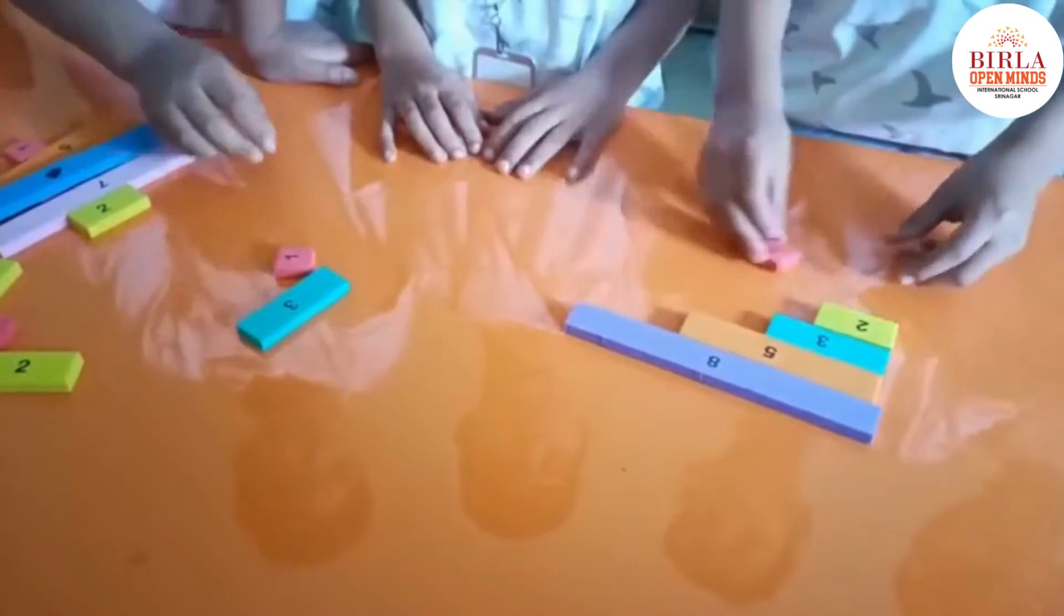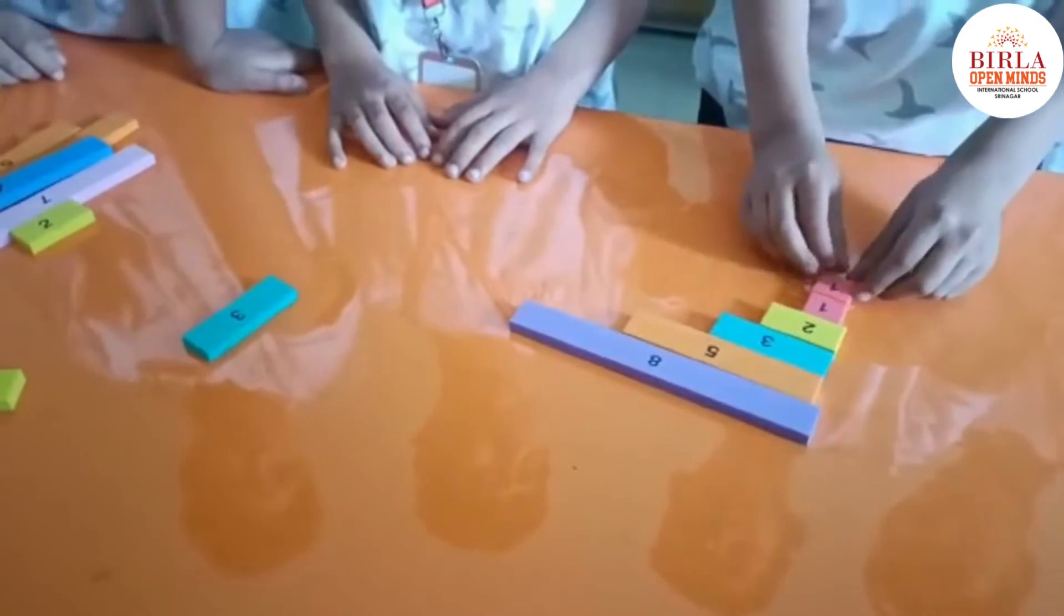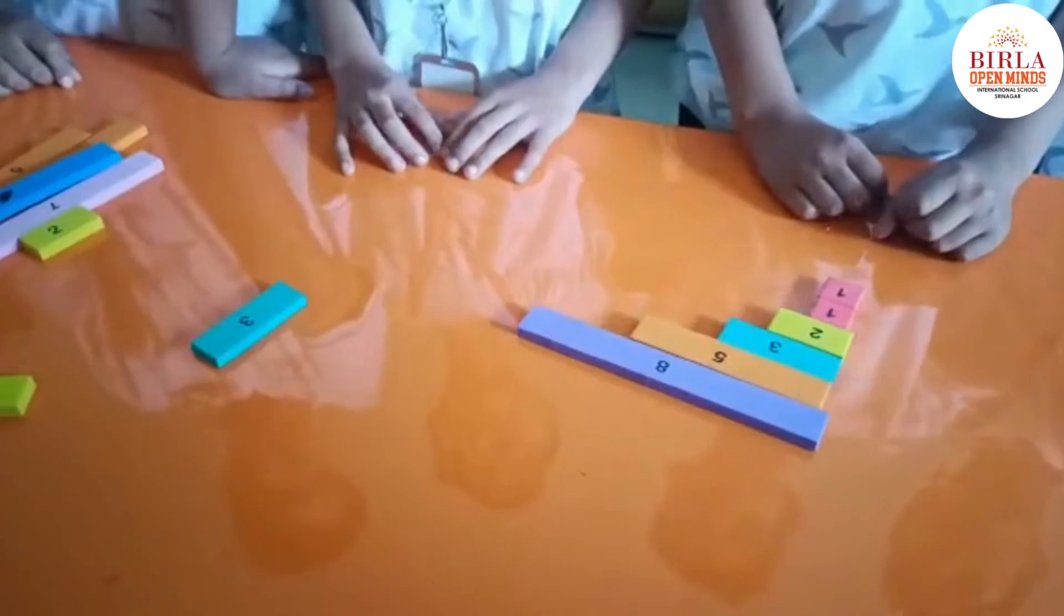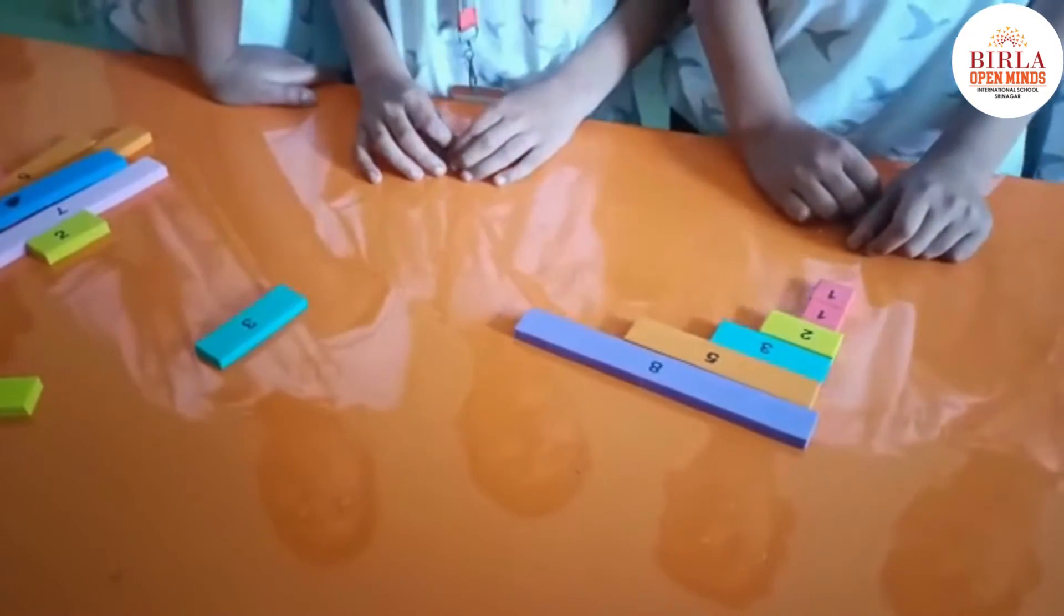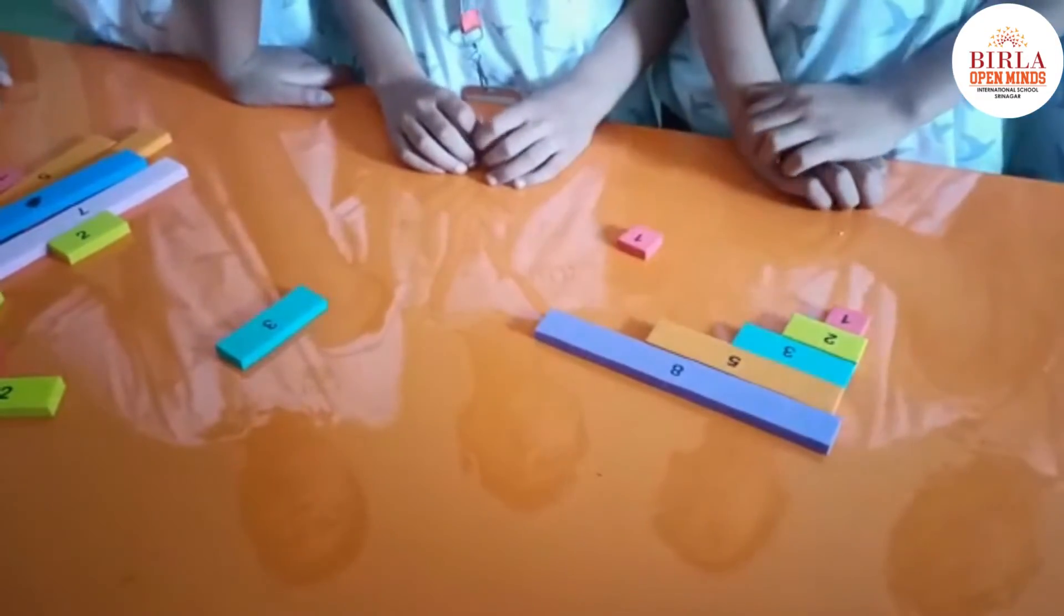3 minus 2 is 1. 2 minus 1 is 1. Now you have got the same two strips. 1 minus 1 is 0. So what will be the HCF of 8 and 5? HCF is 1. Very nice.